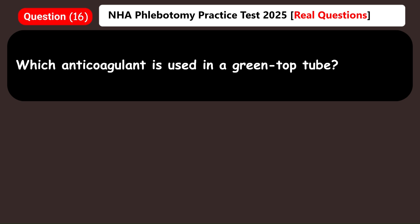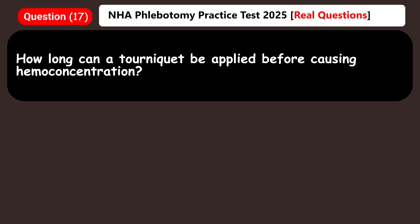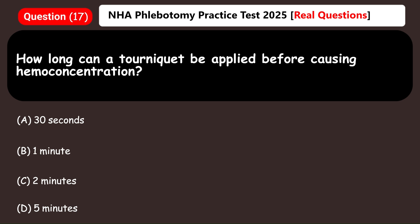Which anticoagulant is used in a green top tube? A) Sodium citrate, B) Lithium heparin, C) EDTA, D) Sodium fluoride. Answer: B) Lithium heparin. How long can a tourniquet be applied before causing hemoconcentration? A) 30 seconds, B) One minute, C) Two minutes, D) Five minutes. Answer: B) One minute.